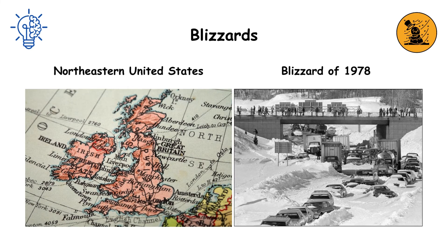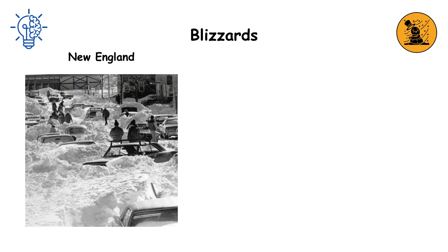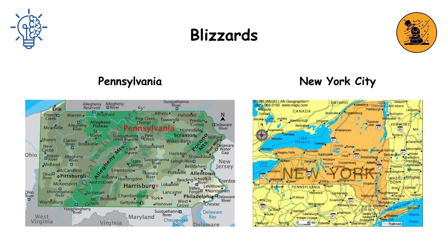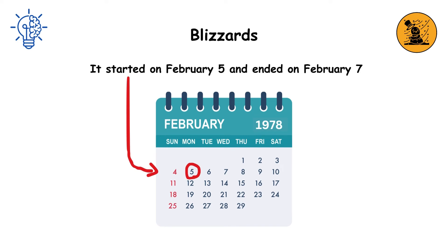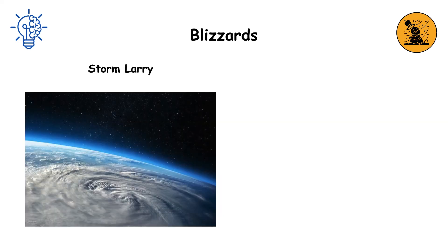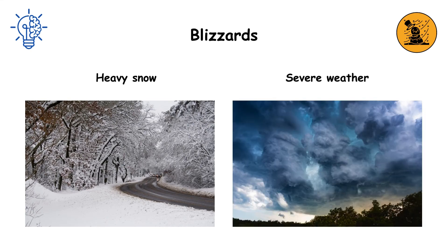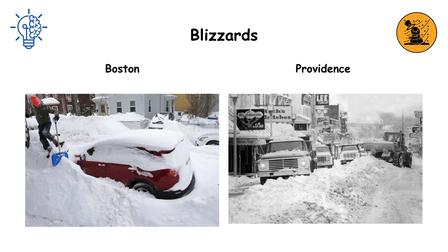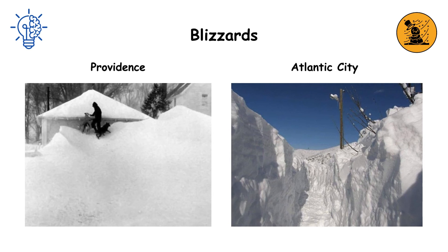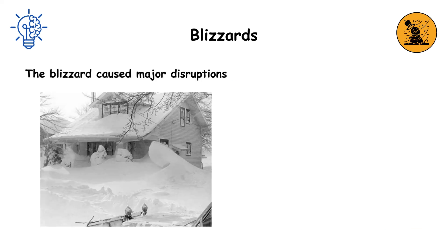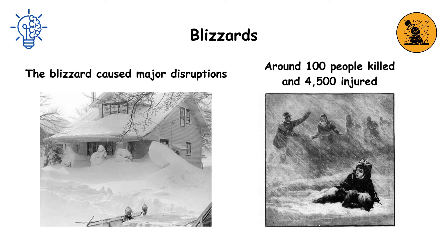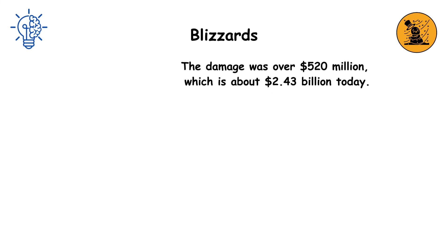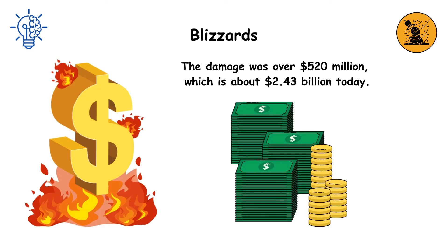The Northeastern United States Blizzard of 1978 was a massive and historic storm that hit New England, New Jersey, Pennsylvania, and the New York City area, starting February 5th and ending February 7th. Known as Storm Larry in Connecticut, it brought heavy snow and severe weather. Boston recorded 27.1 inches of snow and Providence saw 27.6 inches, both records. Atlantic City had its highest snowfall ever at 20.1 inches, while Philadelphia suburbs got 20.2 inches and the city itself received 16 inches. The blizzard caused major disruptions, with around 100 people killed and 4,500 injured, and damage over $520 million, about $2.43 billion today.